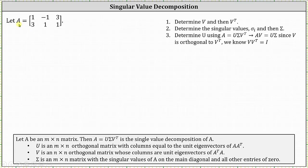To find the singular value decomposition of the given matrix, we will follow three steps. Number one, we'll determine matrix V and then V transpose. Number two, we will determine the singular values of matrix A and form matrix sigma. And step three, we'll determine matrix U by using formulas, which we'll discuss more later.